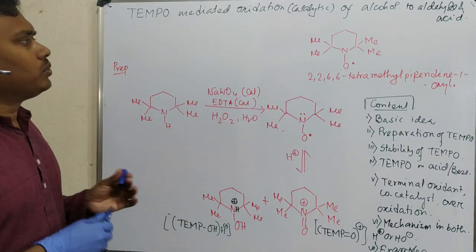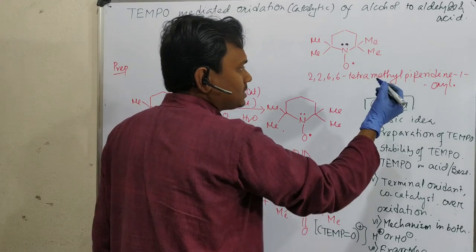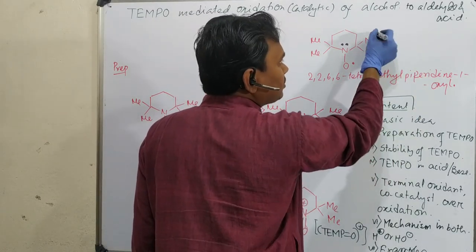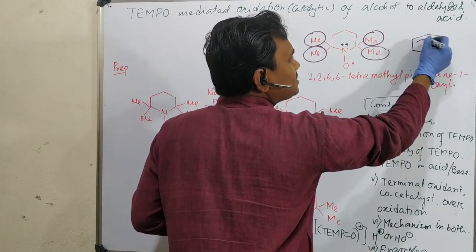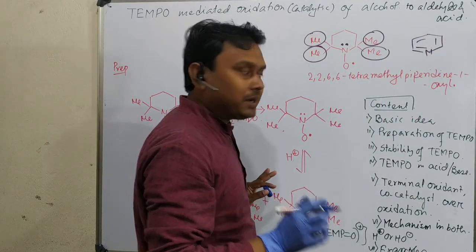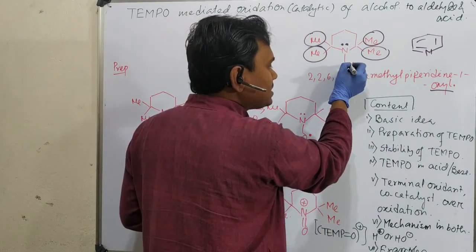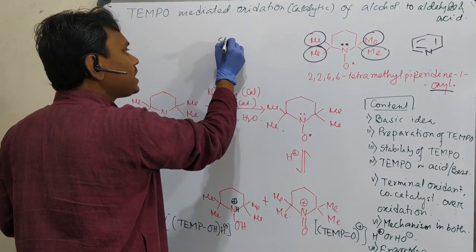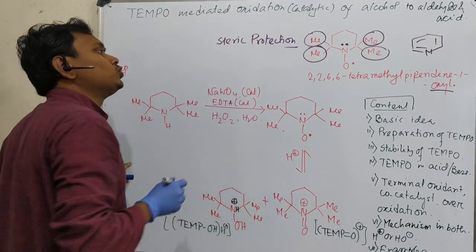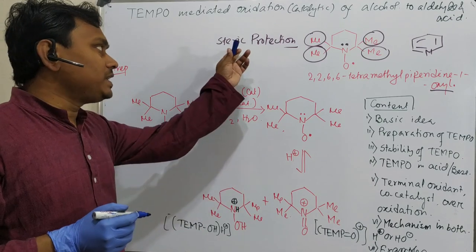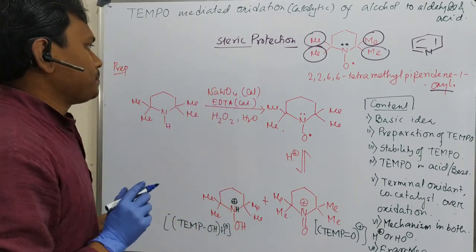As you can see, this TEMPO is better to say N-oxide radical. That's why it is named as piperidine. And why is tetramethyl? Because this is four-methyl. Why piperidine? Because if you take pyridine and hydrogenate, then that is piperidine. And after that one oxide because of this N-O with a radical.